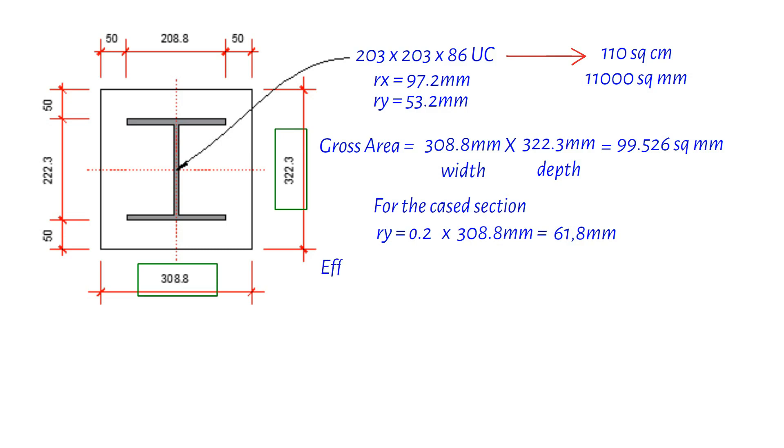Our column has an effective length of 5,000 millimeters, and the steel yield strength is 265 newton per square millimeters. But what factors can affect the yield strength of steel?